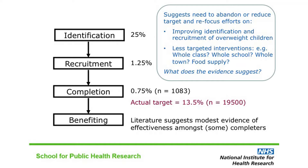This suggests a need to abandon or reduce the 13.5% target, or refocus efforts — possibly improving identification and recruitment of overweight children to make the first part of the theory of change work better. Or perhaps switching to less targeted interventions: if identifying overweight children is a main source of difficulty, perhaps what's needed is a different kind of intervention affecting a whole class, a whole school, a whole town, or something that deals with the problem at source by affecting food supply.